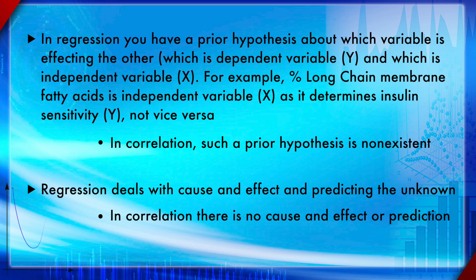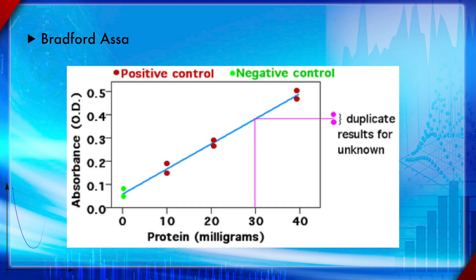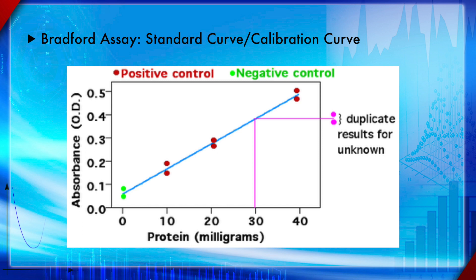In correlation there is no cause and effect or prediction involved. A simple example of how regression helps predict the unknown is the Bradford assay for protein quantification. The first step is to make a standard or calibration curve. X is set as part of the experimental design — it is not measured but controlled.